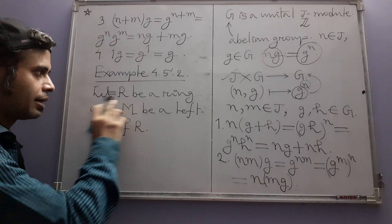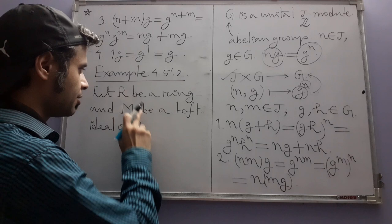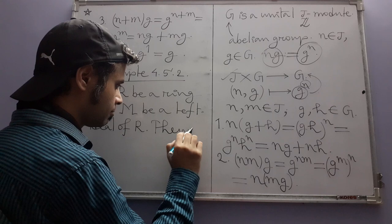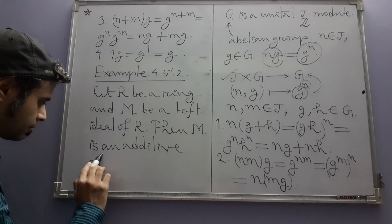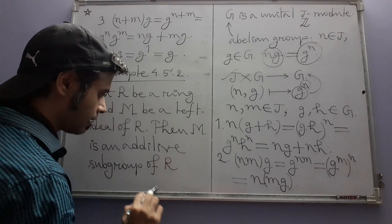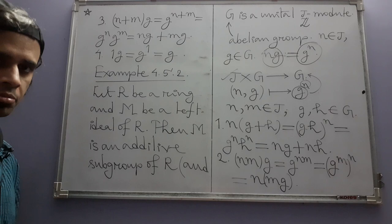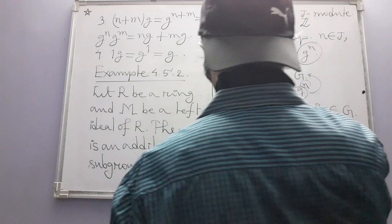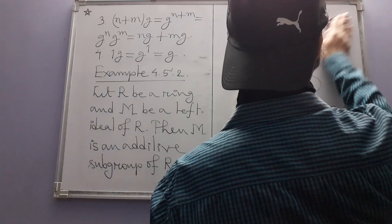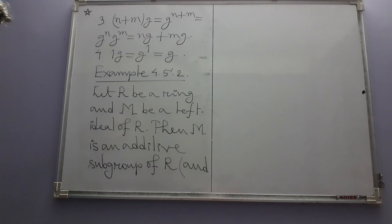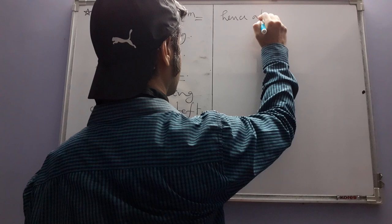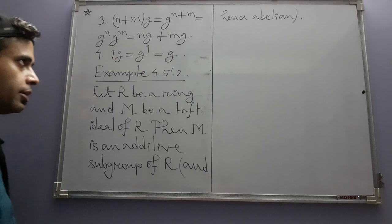Example 3 is a special case of Example 2: R is itself a left ideal of R in a trivial way. This is analogous to how every field is a vector space over itself.